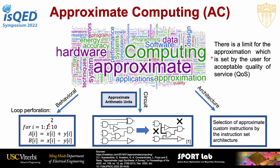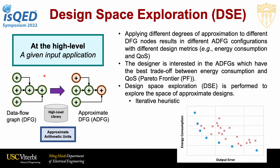One important point is that there is always a limit for any kind of approximation, because there is a minimum acceptable quality of service set by the user of the application. If we consider a given input application at a higher level, it can be represented by a data flow graph, where nodes correspond to operations and edges capture the data dependency between operations. We consider operations to be arithmetic units. If we replace some of the exact nodes with approximate ones from a high-level library of approximate arithmetic modules, we will end up with an approximate data flow graph. Applying different degrees of approximation to different DFG nodes results in a set of different ADFG configurations, each with different design metrics like energy consumption and quality of service.